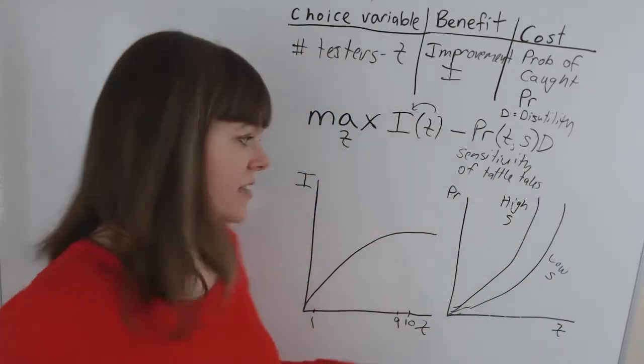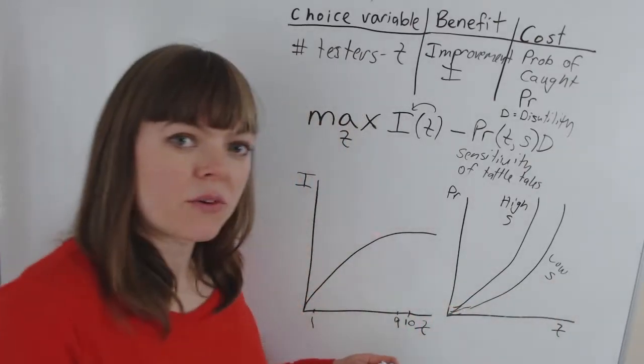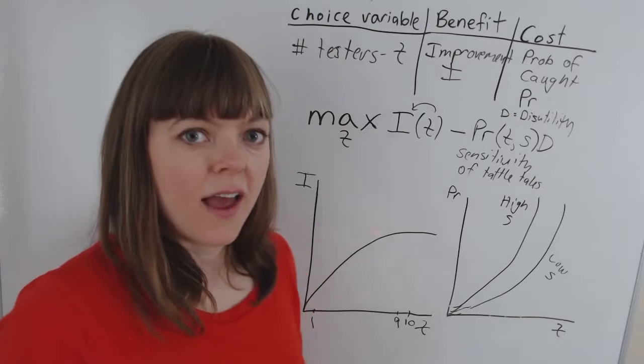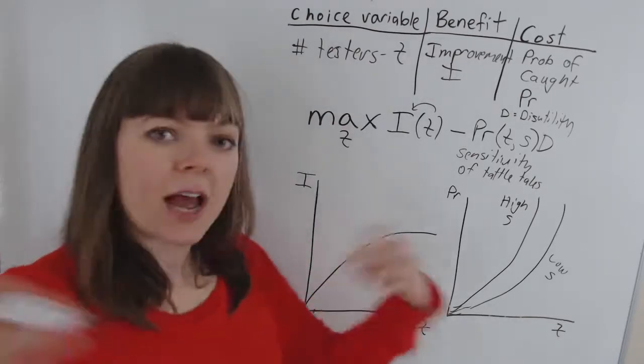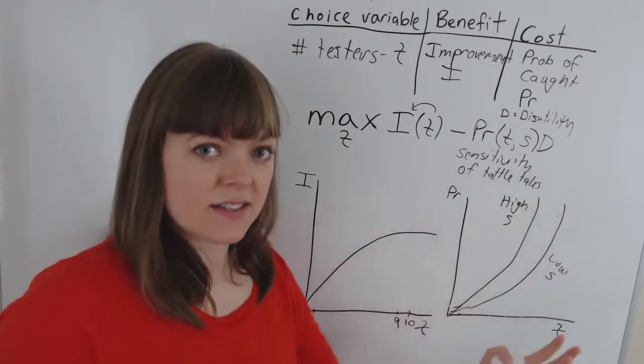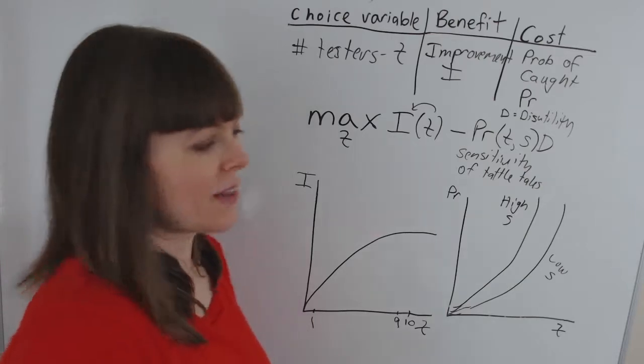As a matter of fact, if there's no tattletales, this graph could be way rotated down. So we see that the shape of this graph actually depends on how sensitive the tattletales are. And as we know, over time in the books, Hermione becomes less and less sensitive as a tattletale and less and less likely to turn people in for breaking the rules.